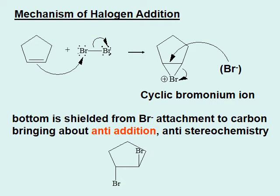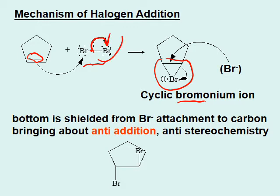This slide shows the mechanism of the halogen addition reaction. One of the Br atoms forms a cyclic structure called a cyclic bromonium ion. The pi electrons from the alkene contribute to Br, but Br cannot have more than eight electrons. So as this ring forms, it transfers its electron pair to the other bromine, and that bromine leaves as Br⁻ with an extra electron.